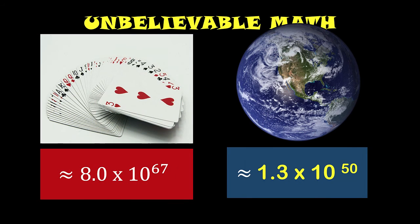So comparing now the two, for the permutations of 52 cards taken 52 at a time, we have approximately 8 × 10^67. And for the number of atoms in the world, we have approximately 1.3 × 10^50. And obviously, the number at the left side is bigger than the number at the right side.